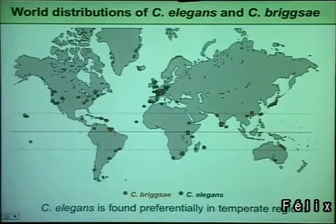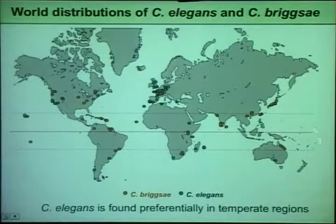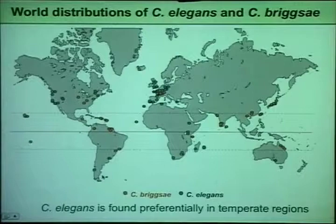This may have a correlate with temperature. Summer in France is hot, and the late fall is cooler. If you look at the world distribution of the two species, briggsae is everywhere, but elegans is mostly in the temperate areas, and the dots in tropical areas may be mostly at altitude. So one hypothesis is that there is a temperature preference for the two species, which is true in the lab, as most of you may know.